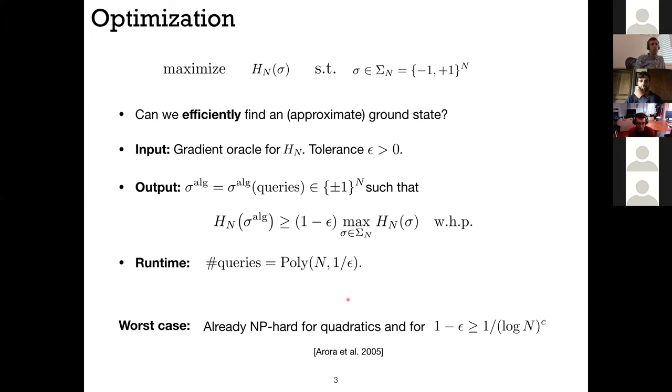So in the worst case this is already NP hard actually. You can show that already for the two-spin model where the j_ijs are not Gaussian but they're chosen in a certain adversarial way, this problem is extremely hard in the sense that already if you want to have an approximation that is very bad, that is close to zero at logarithmic speeds, then this problem is actually NP hard. So in a worst case scenario this problem is not feasible, but for a random scenario like this one we may expect to do a little bit better.